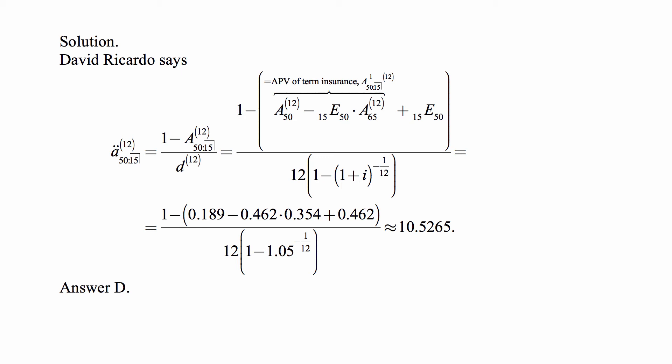So at the top we end up with 1 minus 0.189 minus 0.462 times 0.354 plus 0.462, and at the bottom 12 times 1 minus 1.05 to the negative 1/12. That's a little bit of calculation, but it's not really that big of a deal. I would suggest you calculate the bottom part first, put it in the memory of the calculator, then the top is relatively easy. Just calculate that and then divide it by the quantity you have in the memory. And that comes out to be approximately 10.5265, which is answer D.